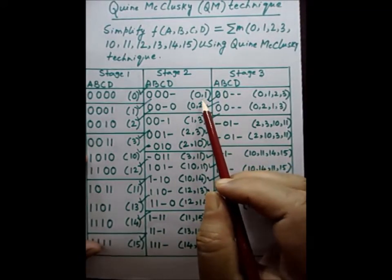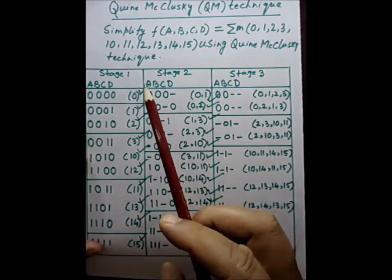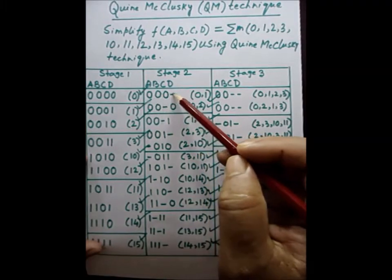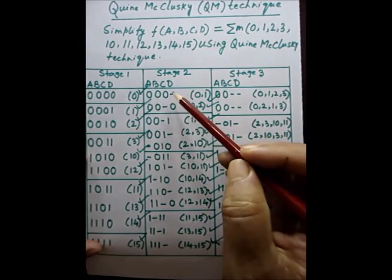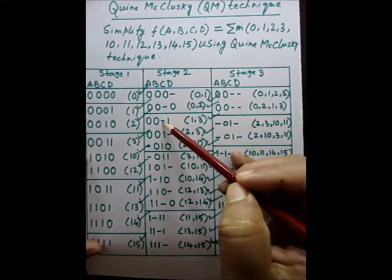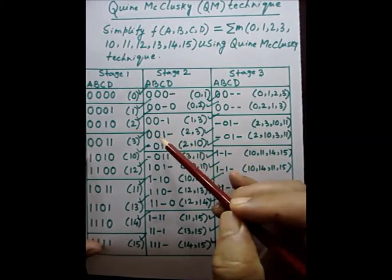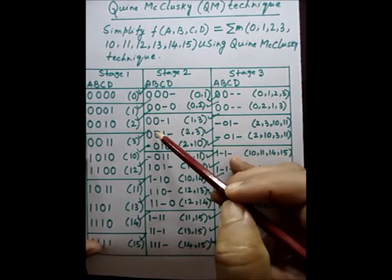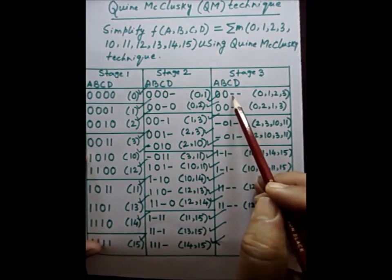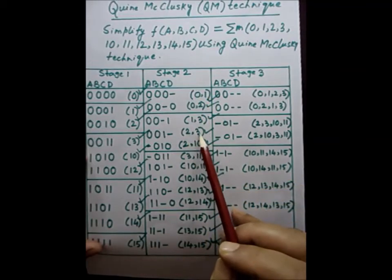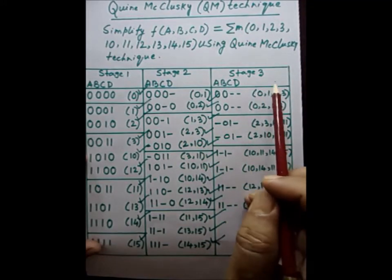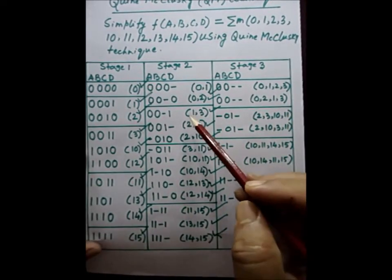From the second stage to the third stage, the process is similar, but with an important rule: when comparing two entries for mapping, the dash must be in the same bit position in both entries. If one entry has a dash in the fourth place and the other also has a dash in the fourth place, mapping can proceed. For example, 000- mapped with 001- gives 00-- with bracket (0,1,2,3).